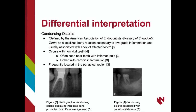Condensing osteitis is defined by the American Association of Endodontists' glossary of endodontic terms as a localized bony reaction secondary to low-grade inflammation, usually associated with the apex of an affected tooth. Condensing osteitis occurs with non-vital teeth and can be radiographically seen near teeth with inflamed pulp, most often in the periapical region. This differs from idiopathic osteosclerosis, which occurs with vital teeth and is not linked to chronic inflammation. Hence, a tooth vitality test would be the best way to differentially diagnose.